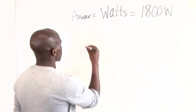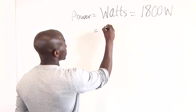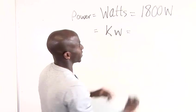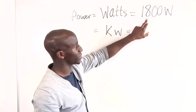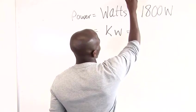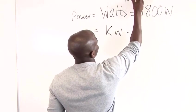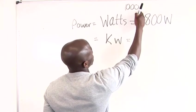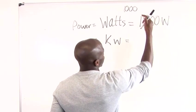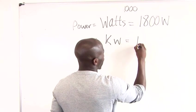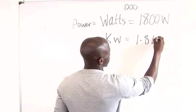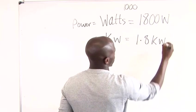The first thing we do then is divide this by a thousand. The decimal point is here. A thousand looks like that, so three zeros. All you have to do is just make three jumps to the left, and that will give us 1.8 kilowatts.